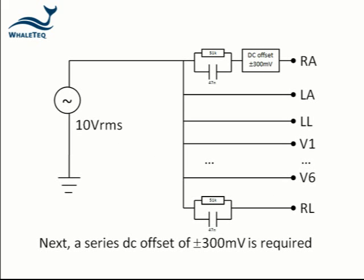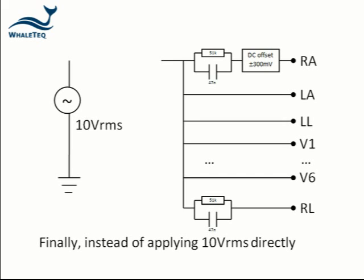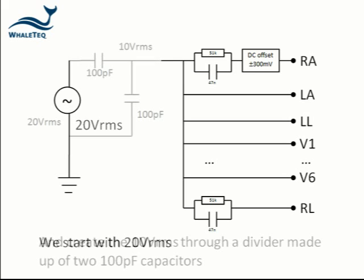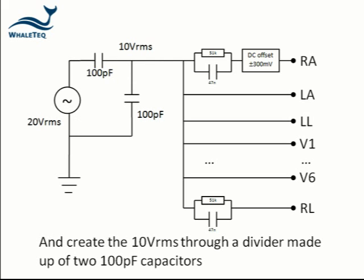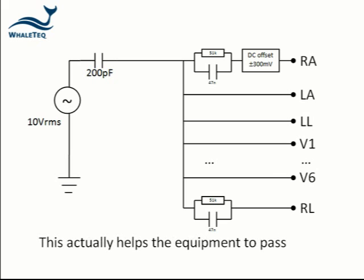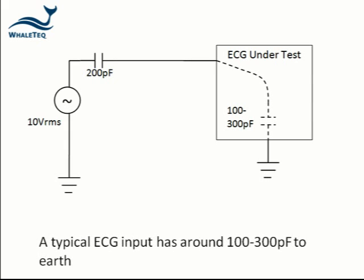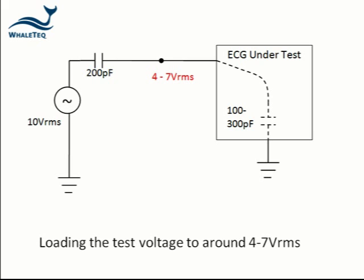Next, a series DC offset of 300 mV is added. This generally has no effect on the result, but is anyhow required by the standard. Finally, instead of applying the voltage directly, the standard requires us to start with 20 volts RMS and create the 10 volts through a divider made up of two 100 pF capacitors. This creates an equivalent circuit of 10 volts source with a series 200 pF. This actually helps the equipment to pass, as the equipment can load down the voltage during the test. A typical ECG input has around 100 to 300 pF to earth, which brings the actual test voltage down to around 4 to 7 volts RMS.